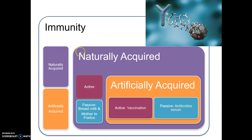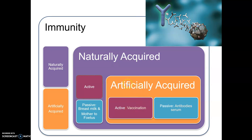To wrap up: we have two types of immunity — naturally acquired and artificially acquired. Naturally acquired immunity may be active, which is the body's own immune response, or passive, from mother to fetus via the placenta or to baby via breast milk. Artificially acquired immunity may be active in the form of a vaccination, or passive and short-lived in the form of an antibody serum.